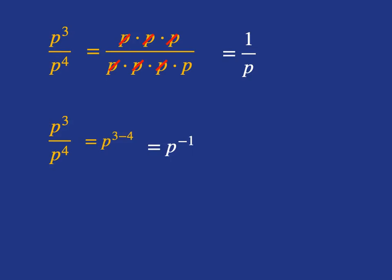Obviously, we don't want p³ over p⁴ to be equal to two different things, so that's why it makes complete sense to say that p to the power of minus 1 must be equal to 1 over p.